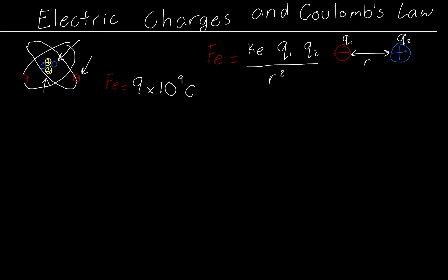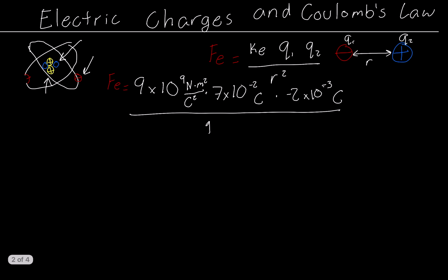And now we just need to replace the charges. Let's make up a random number. Here, 7 times 10 to the negative 2 Coulombs times negative 2 times 10 to the negative 3 Coulombs. The unit for Coulomb's constant is actually Newtons times meters squared over Coulombs squared. And now all of this is going to be divided by 1 squared, that's going to be the distance from each charge.